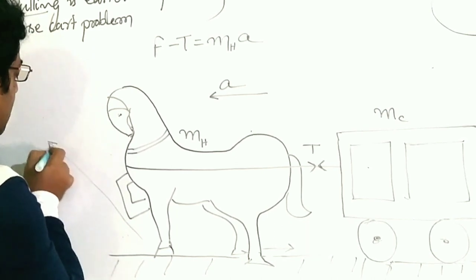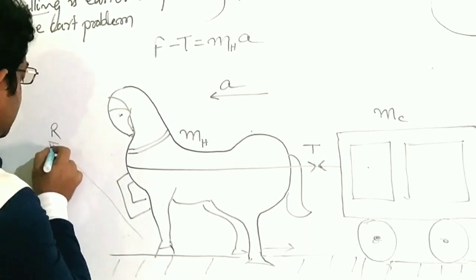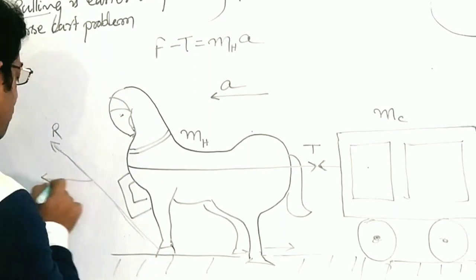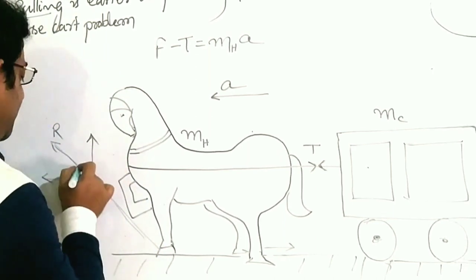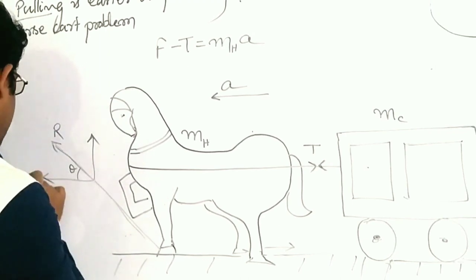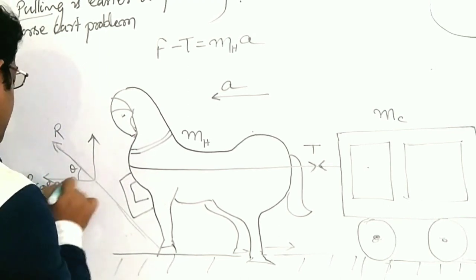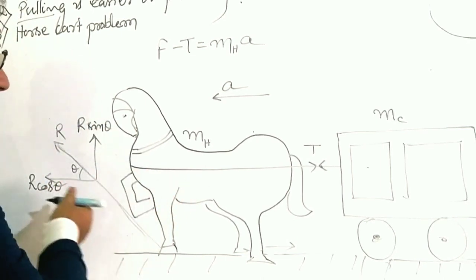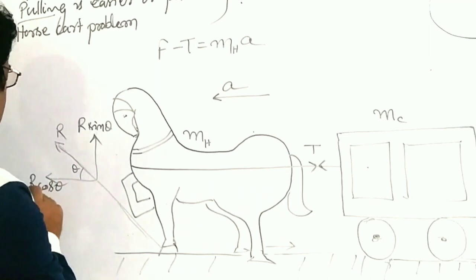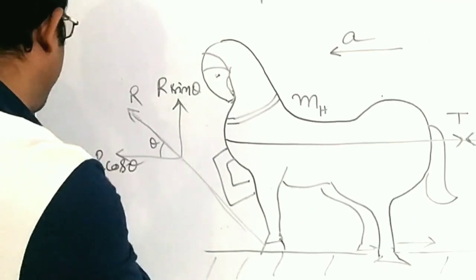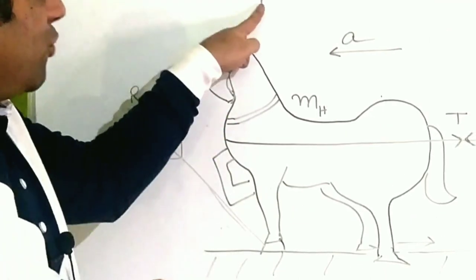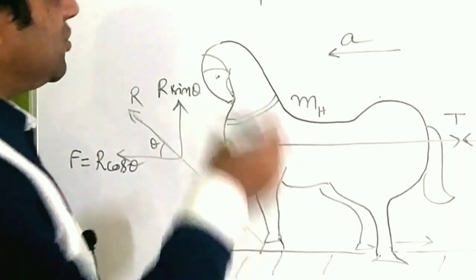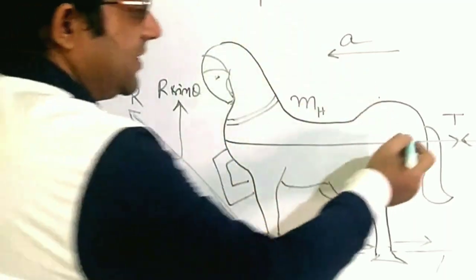The ground gives one reaction, and this reaction can be resolved into two components. If this is at an angle theta, R cos theta and R sin theta. And this horizontal component R cos theta is responsible for the motion of the horse. That is the force F I say. This force, what the horse applies, is the horizontal component R cos theta.